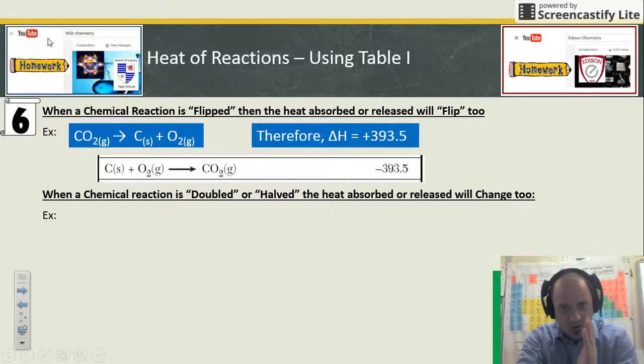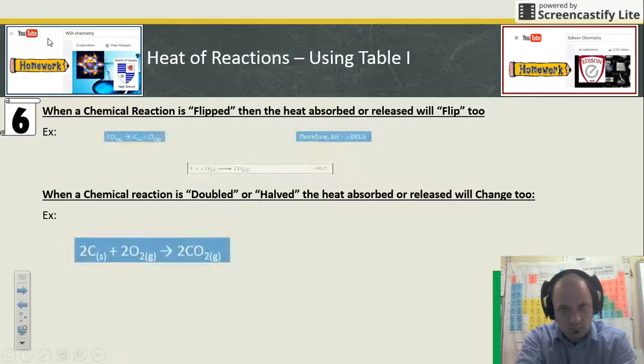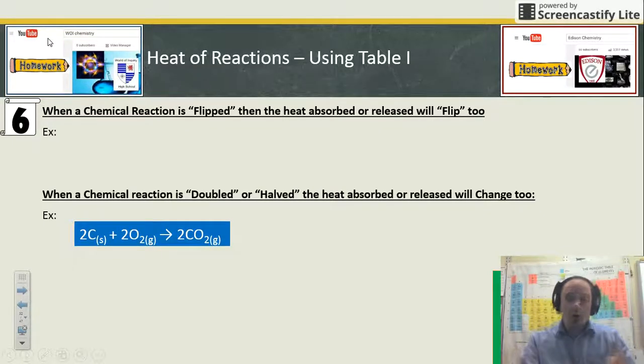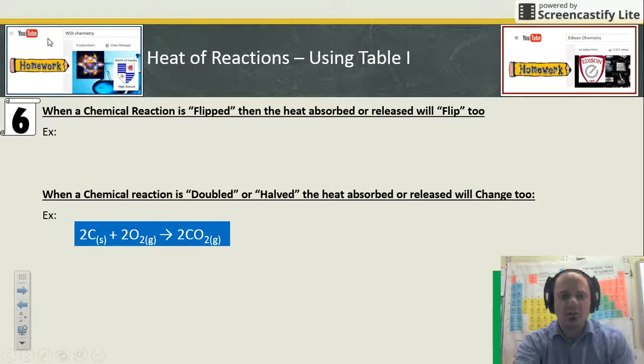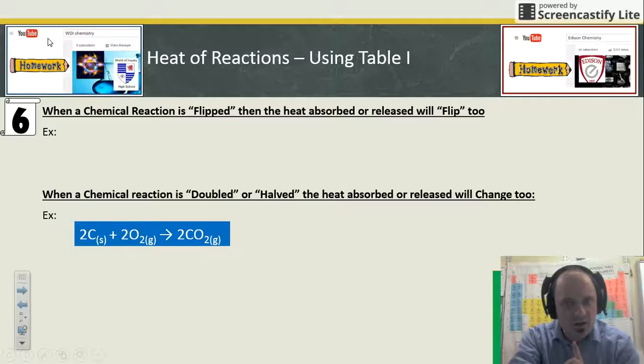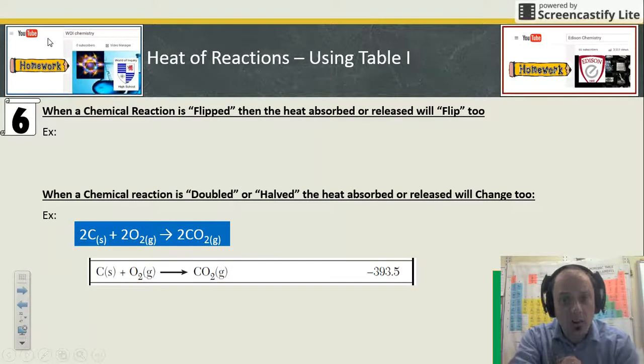If you double or triple or half a reaction, the amount of heat has to be doubled, tripled, or halved as well. You can tell a reaction has been doubled by looking at the coefficients in front of our compounds. On table I you see carbon solid plus oxygen gas makes carbon dioxide gas, negative 393.5.